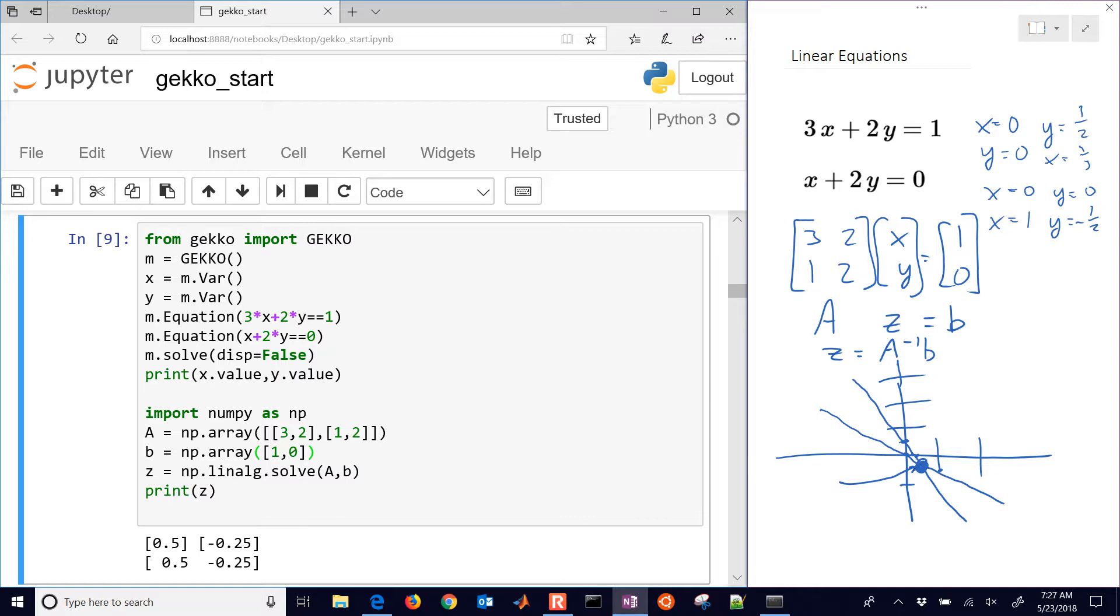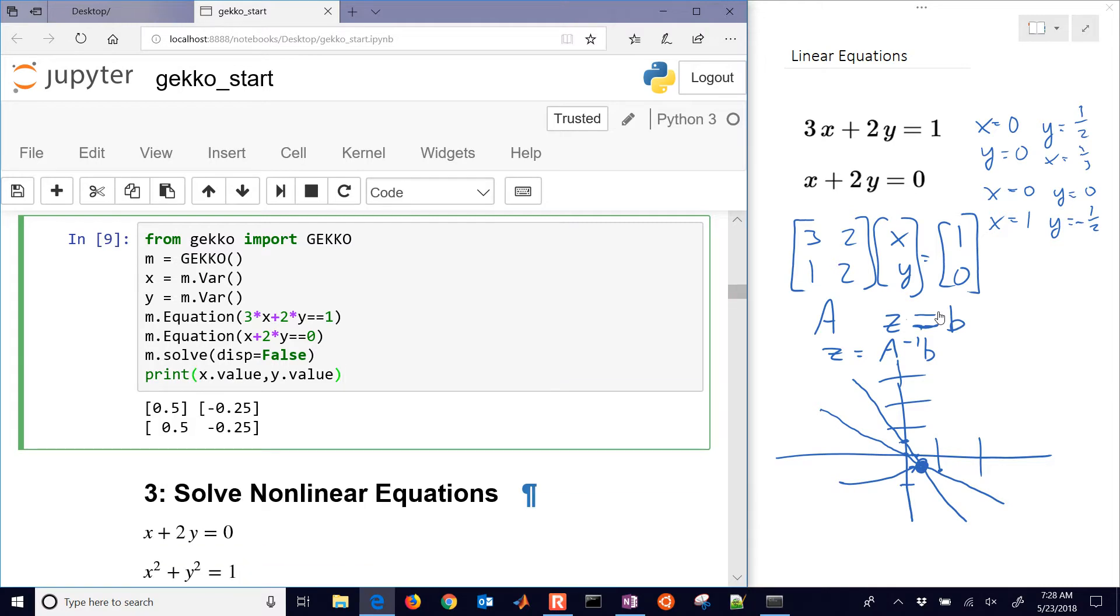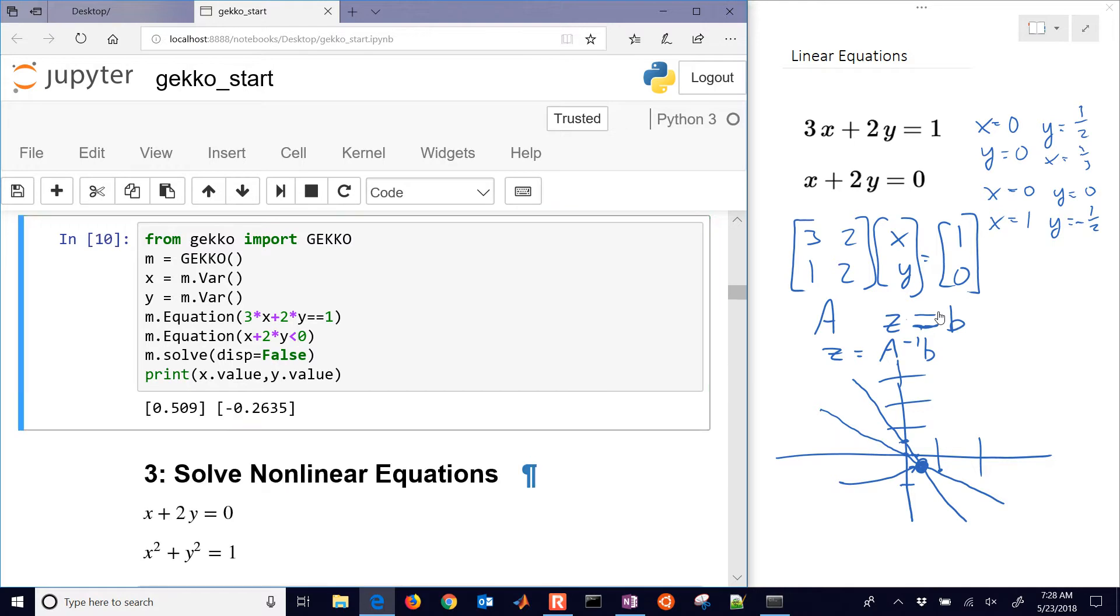Sometimes we have, as well, we have not just equality constraints, but we also have inequality constraints for our linear set of equations. So this could be, for example, instead of a times z equals b, we could have a times z less than or equal to b. And there's other, you can mix equality or inequality constraints as well. So you can't necessarily use this package, the lin-alge package for that. But you can with Gecko. So let's just go ahead and say this is less than 0 instead of equal to 0. And then let's just see what solution it gives us.